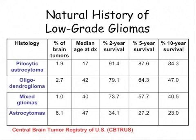In order to best determine what treatment modality is beneficial for patients, a good understanding of the natural history of the disease is warranted. As you can see from the table, pilocytic astrocytomas tend to do significantly better in terms of survival compared to the pure astrocytomas, and oligodendrogliomas tend to do a little bit better than astrocytomas. The 10-year survival rate for astrocytomas is about 23%, whereas that for oligodendrogliomas is in the range of 47%.